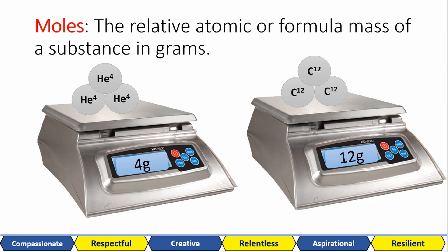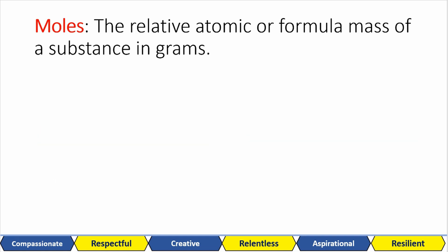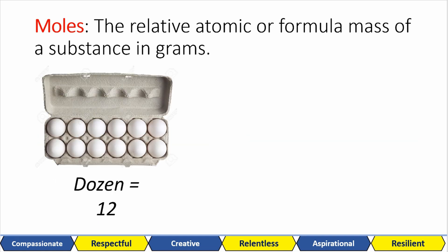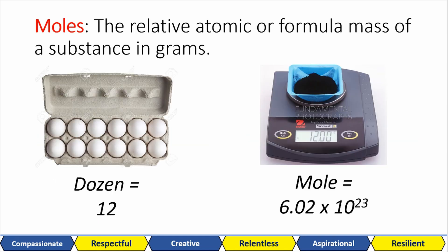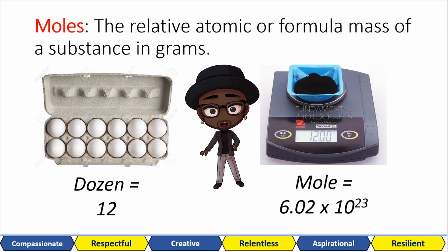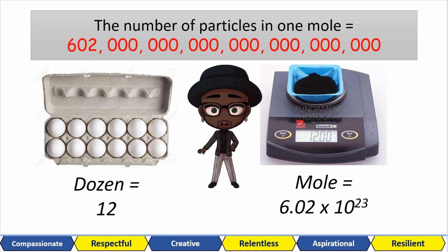The mole also helps us complete chemical calculations because it's the name for a number. Just like a dozen is 12. One mole is this number. 6.02 times 10 to the 23. I can't even say how big this number is. It's ridiculously large. That's the number of particles that's in one mole of something. So in this picture, that's one mole of carbon and it has that many particles inside it. 6.02 times 10 to the 23.